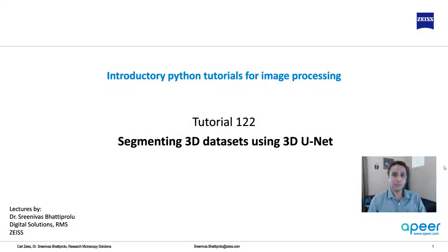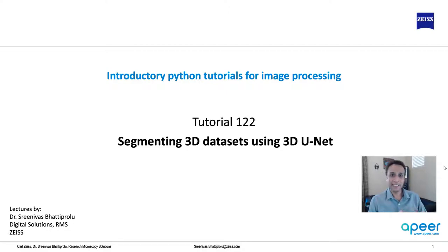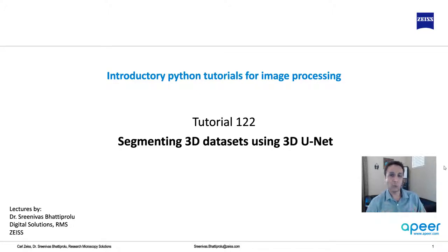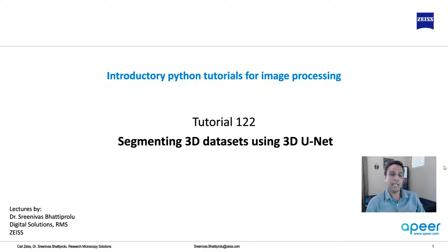Welcome to introductory Python tutorials with a special focus on image processing. In the last several videos we have been working with U-Nets primarily on 2D datasets. Now, what do you do with a 3D dataset? One approach is to segment one 2D slice at a time, train a 2D U-Net, predict slice by slice, and reconstruct the volume — which works fine in many cases, but may not be ideal for a lot of 3D datasets, because you probably need information from planes above and below to properly segment a given plane.